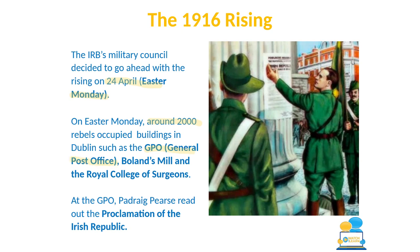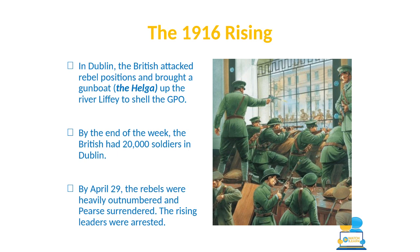The IRB's military council was determined to go ahead with the rising anyway. The men who would sign the Proclamation of the Irish Republic decided the rising should go ahead on Easter Monday, April 24th. On Easter Monday, about 2,000 rebels occupied key buildings in Dublin including the General Post Office on what was then called Sackville Street, Boland's Mill, and the Royal College of Surgeons. Patrick Pearse stood on the steps of the GPO and read out the Proclamation of the Irish Republic.